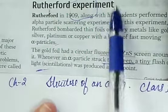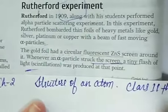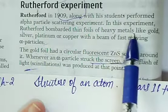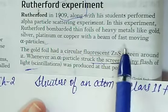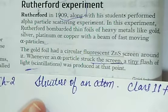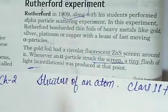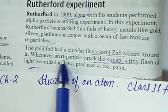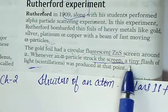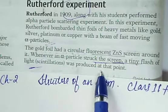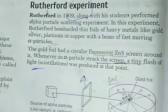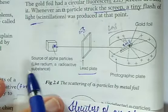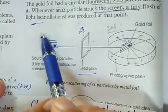He had a major role in finding information about the positions of electrons and protons. In this experiment, they used heavy metals like gold and fast moving alpha rays. The gold foil had a circular fluorescent zinc sulfide screen around it. Whenever an alpha particle struck the screen, a tiny flash of light was produced at that point.